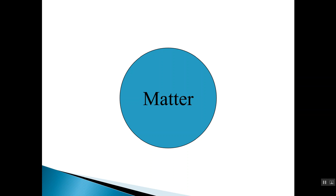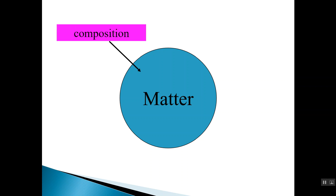At the heart of chemistry is matter. By definition, matter is anything that has mass and volume. In chemistry we are concerned with the type of matter in terms of its composition — basically its makeup, the different elements that go into making up a substance, and the relative proportions of those different elements present in that substance.